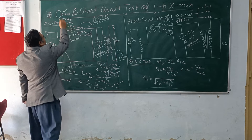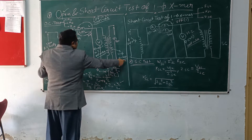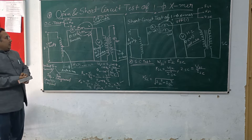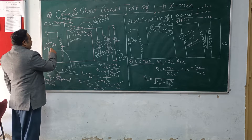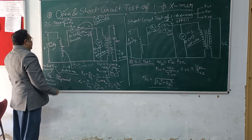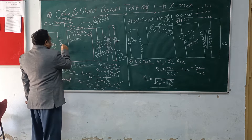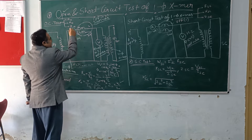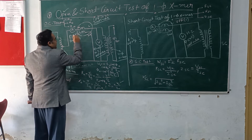Let us first focus on the open circuit test. You can see this is the schematic diagram of the open circuit test on a transformer. What we have in this circuit diagram: we have an autotransformer which can provide a variable AC supply up to 240V. Then one of its ends is connected to an ammeter - this is an AC ammeter, a moving iron type ammeter of range 0 to 2 amperes.